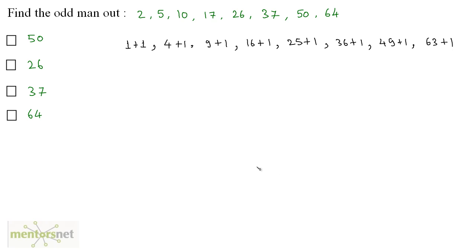Now you may comprehend that there is some pattern or there is some relation. Well, if you don't understand it, let us again rewrite it. 1 plus 1 can be written as 1 square plus 1. 4 plus 1 can be written as 2 square plus 1. 9 plus 1 is 3 square plus 1. 16 plus 1 is 4 square plus 1. In the same way, this pattern goes on. This is 5 square plus 1. This is 6 square plus 1. 49 is 7 square plus 1. But 63 is not a perfect square. Hence, this number 64 is the odd man out.